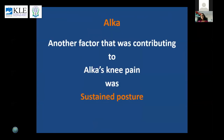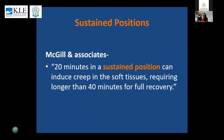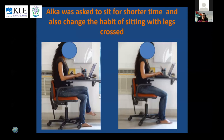Another factor contributing to Alka's knee pain was her sustained postures. Her activities improved, but static sustained postures were still causing pain, so we corrected those too. Michael and Associates noted that 20 minutes in a sustained posture can induce creep into soft tissue, requiring more than 40 minutes to fully recover. Alka was asked to sit less so her hip muscles — especially gluteus maximus and medius — would not get stretched all the time, and not to sit cross-legged. Sitting cross-legged attenuates the lateral rotators and gluteus maximus and medius, and in spite of doing exercises, results will not be as good if those muscles are continuously stretched in static positions.